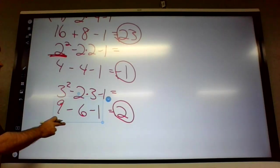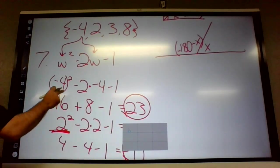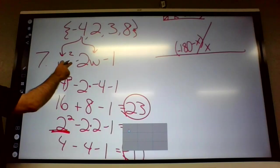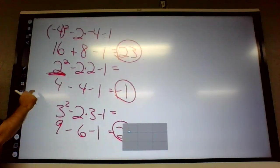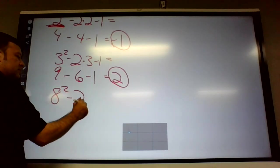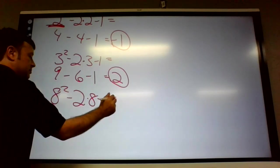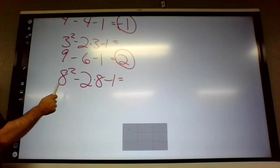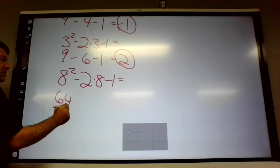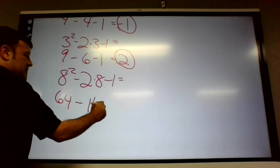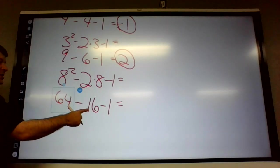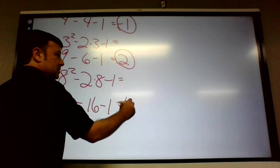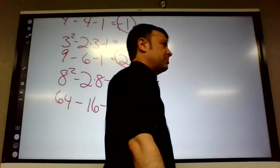And then we're plugging in three. Three squared minus two times three minus one. So this would be three squared is what? Nine. Two times three. So nine minus six is three, minus one is two. Last one of these, eight squared minus two times eight, minus one. Eight squared, 64. Two times eight, 16. Sixty-four minus 16 is 48 minus one, 47.